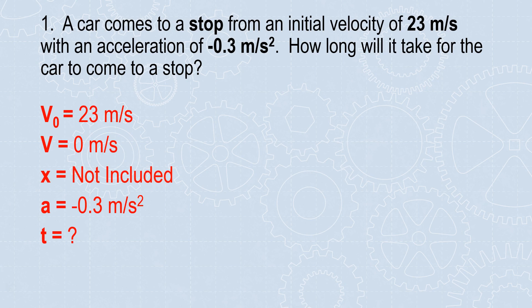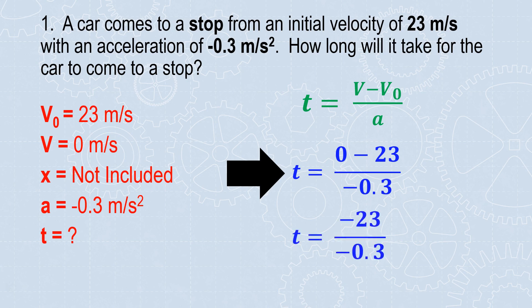We've listed all our given information, including what we're solving for and what's not included. Here's the equation you were given. Here's the equation with everything substituted in. Evaluate: 0 minus 23 equals negative 23. I always simplify the top, simplify the bottom, and then divide to get 76.67. I finalize my answer by throwing a unit on there and checking my work. Time is measured in seconds.